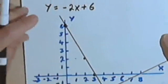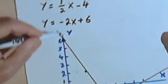And this line, I'll label it. That's going to be y equals negative 2x plus 6.